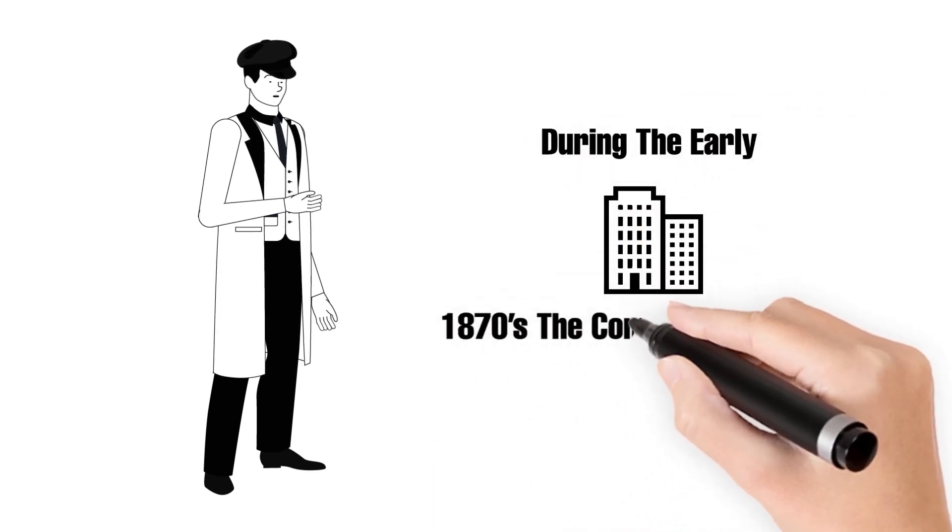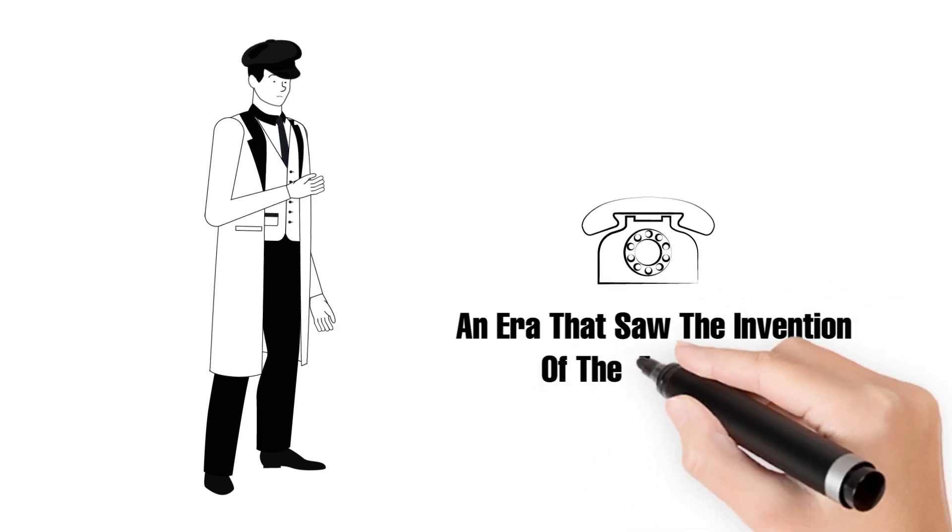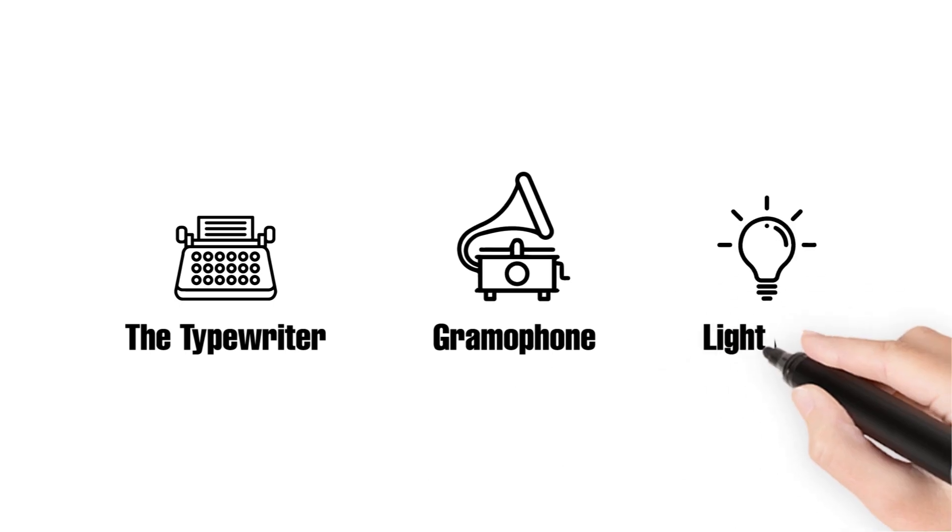During the early 1870s, the company prospered in an era that saw the invention of the telephone, the typewriter, the gramophone, and the light bulb.